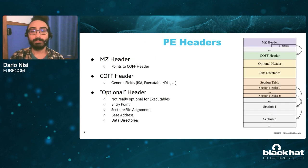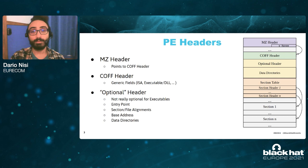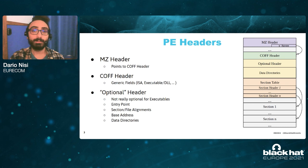Each program starts with the MZ header, which is there only for compatibility reasons nowadays. It's only used to locate in memory the starting offset of the COFF header. This other header contains generic information about the program itself, such as the instruction set for which it is compiled, and whether it is a standalone executable or a dynamically linked library.